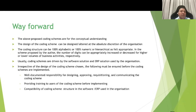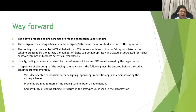The above proposed coding schemes are only for conceptual understanding. The design of coding schemes can be altered at the absolute discretion of the organization. The coding structure can be 100% alphabetic, 100% numeric, or hierarchical as felt appropriate. For example, material coding is most often purely numeric. In accounts, normally alphanumeric coding is used, with the first digit representing the type of document — such as customer document, material document, or JV — followed by subsequent code numbering. The number of digits can be appropriately increased or decreased based on the estimated volume of business activities per financial year.